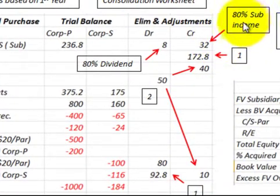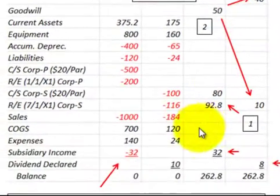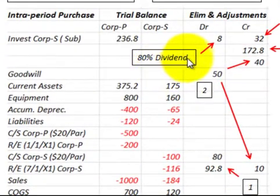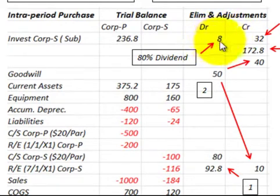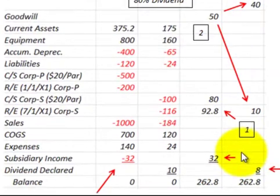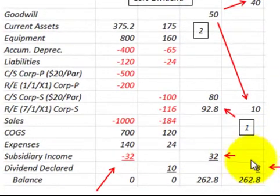Then we eliminate 80% of the sub's income: credit the investment account for $32,000 and debit the subsidiary income account for $32,000. Finally, taking care of the 80% dividend declared by the sub: debit the investment account in the subsidiary for $8,000, and credit dividends declared for $8,000.